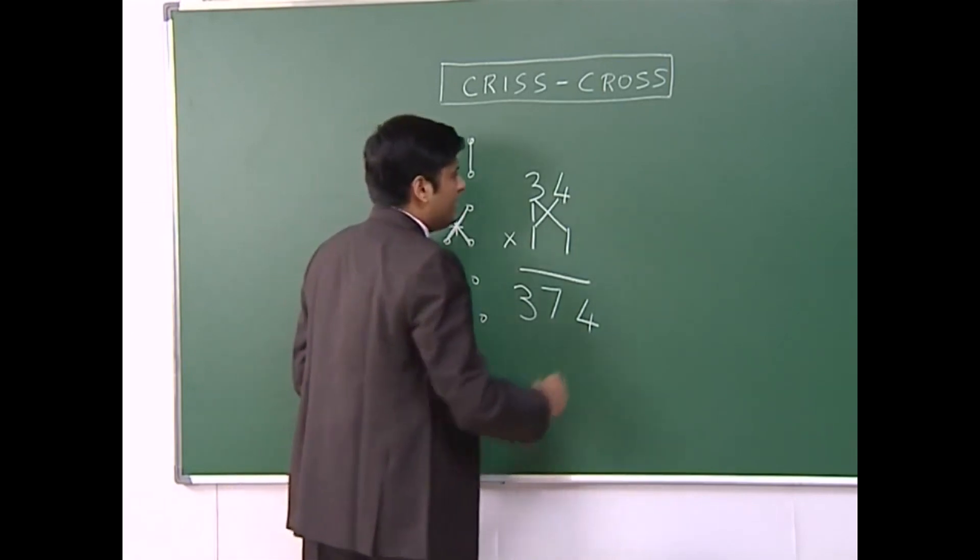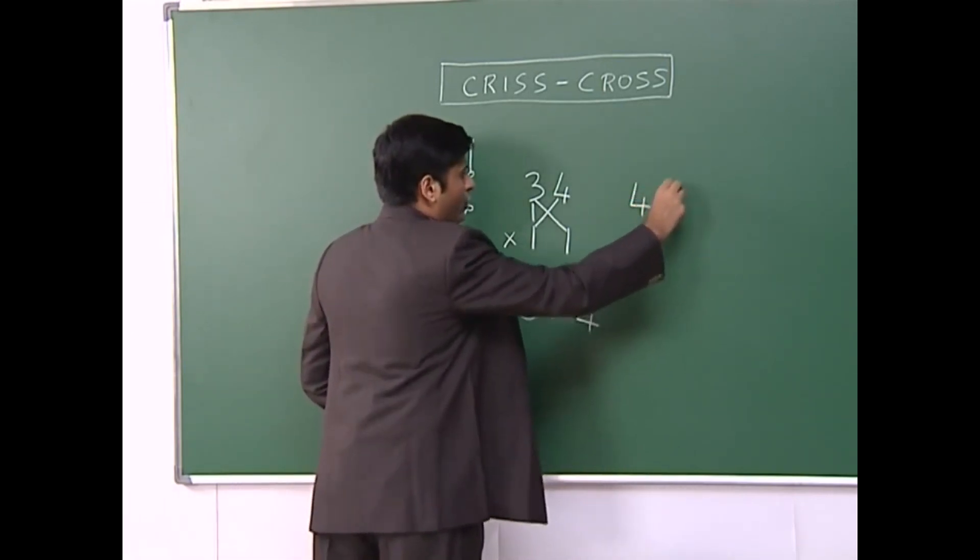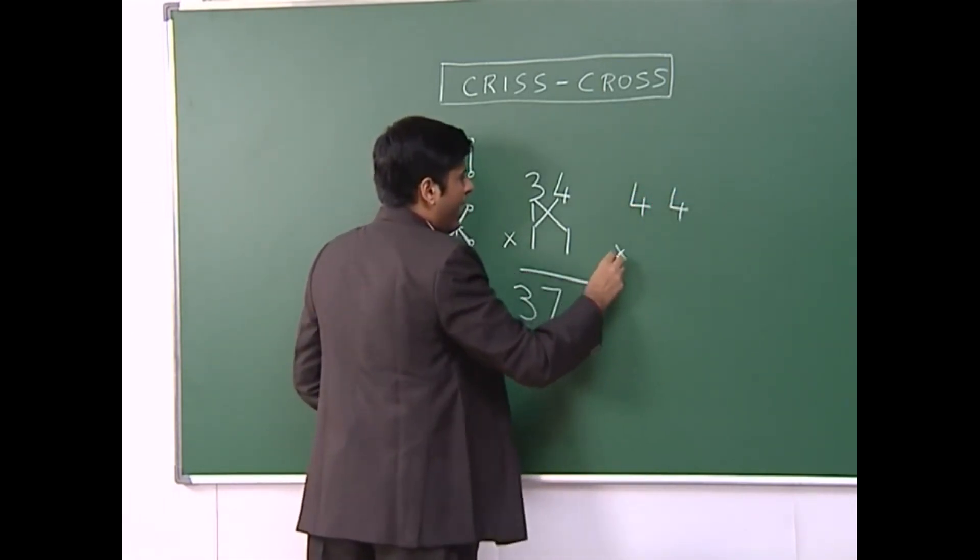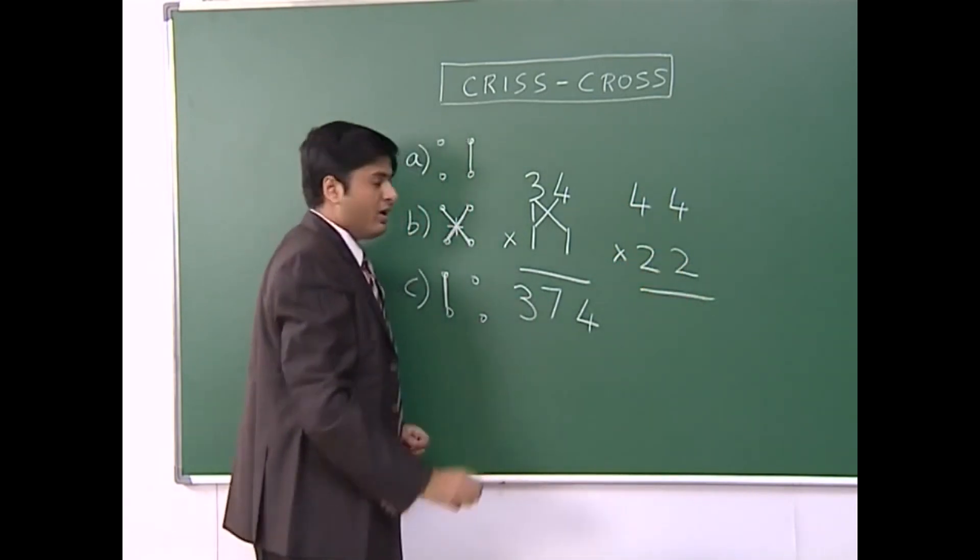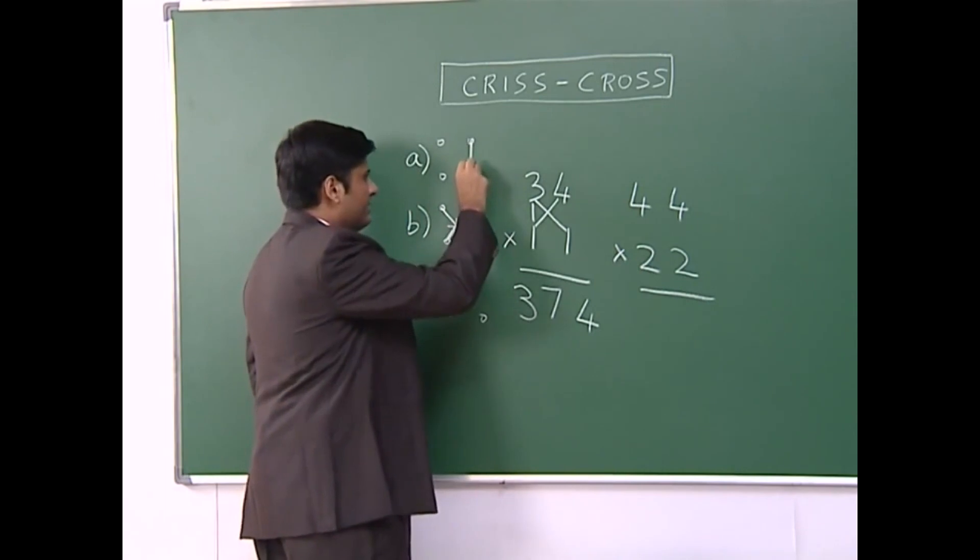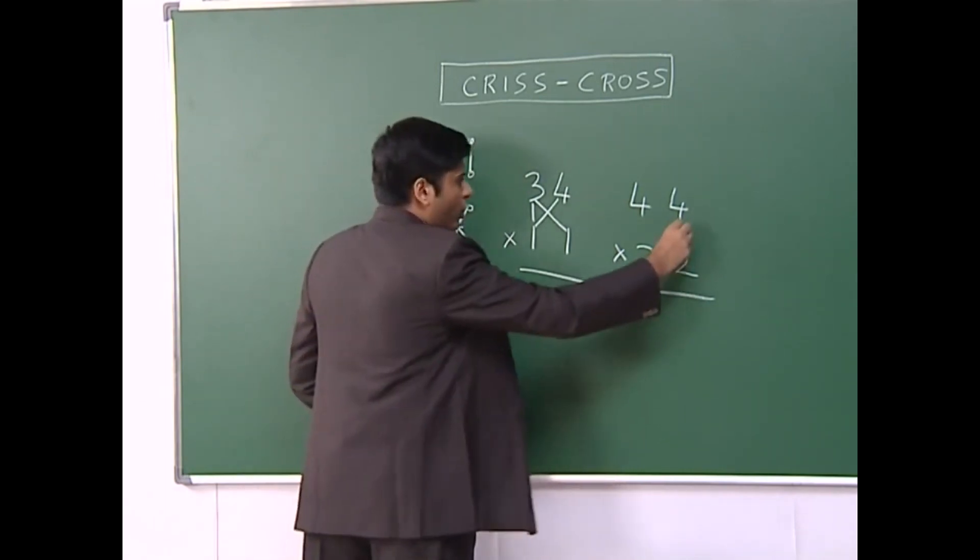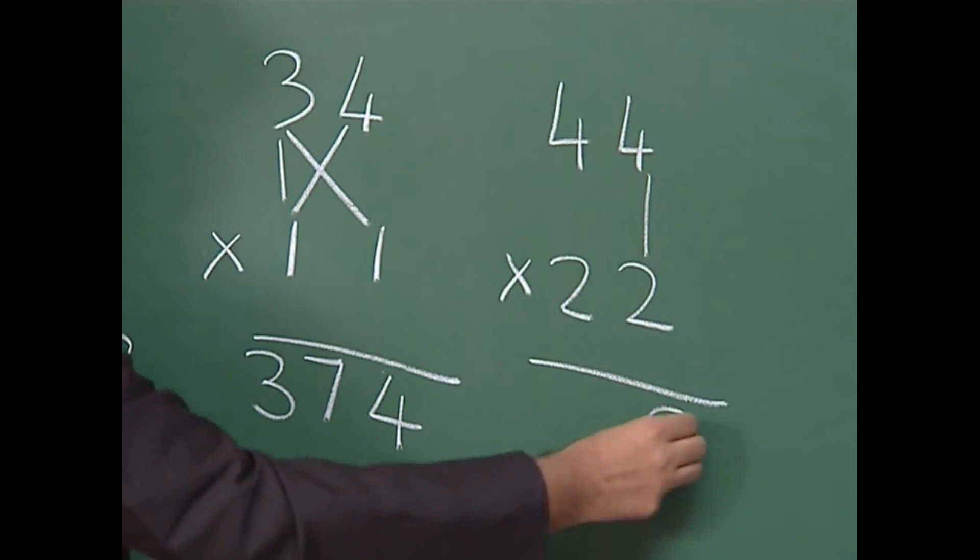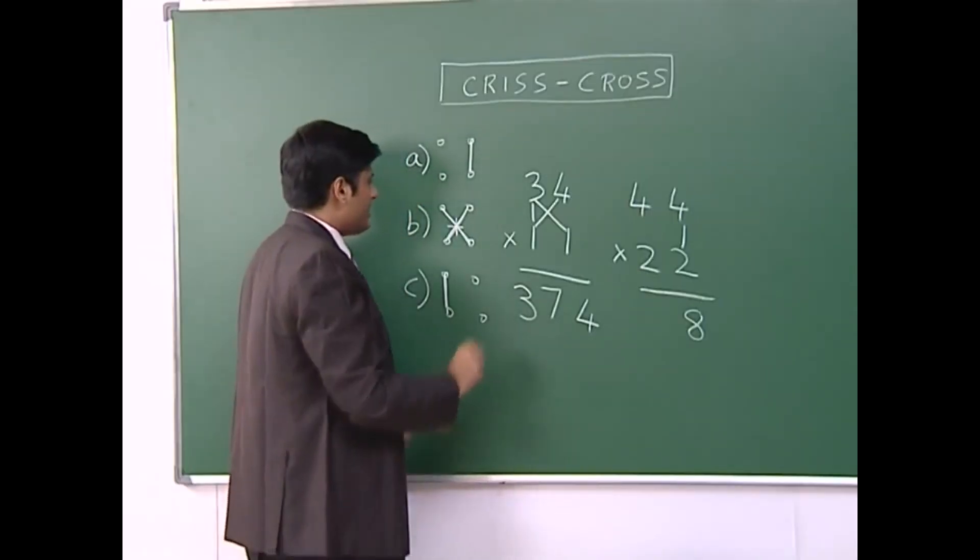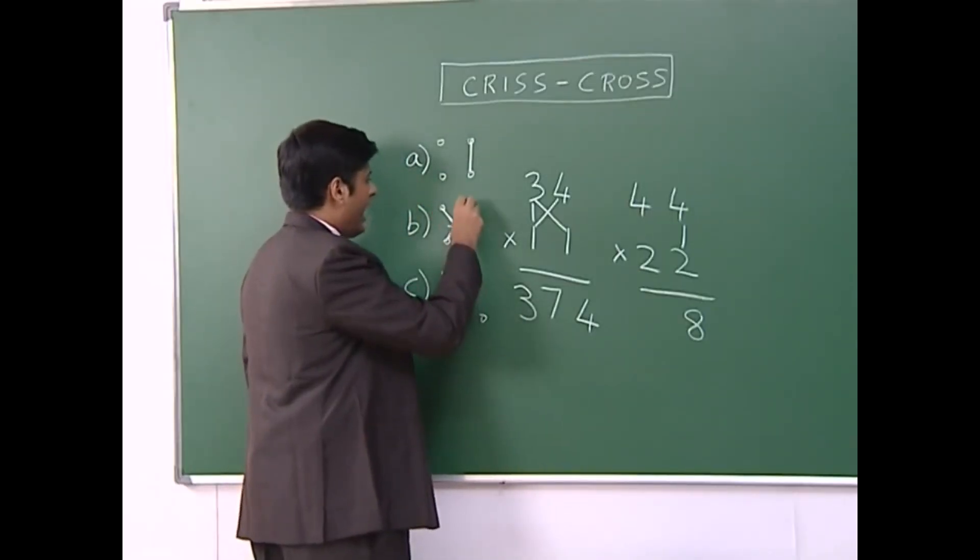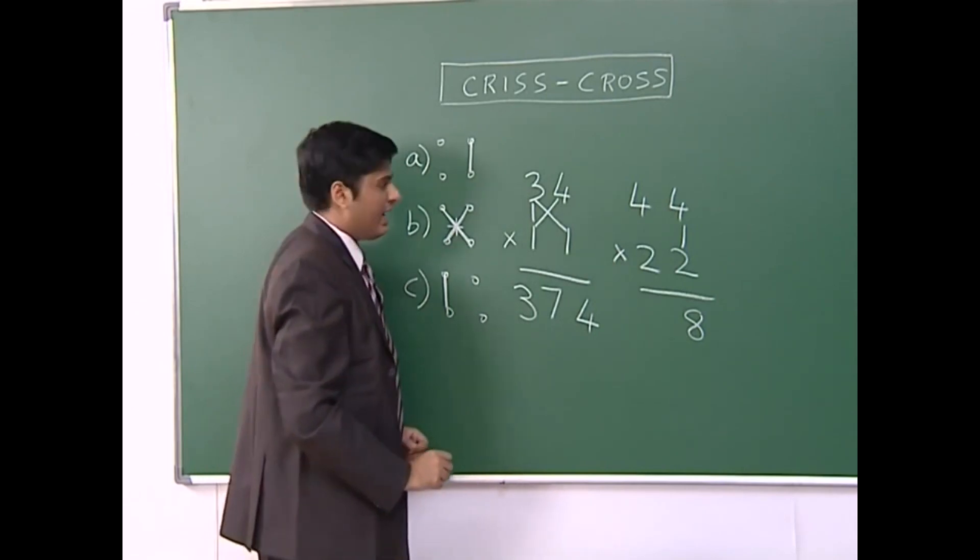Suppose I have to multiply say 44 by 22. First step says multiply these two numbers. So 4 times 2 is 8. Second step says multiply cross and cross. We will add both the answers.